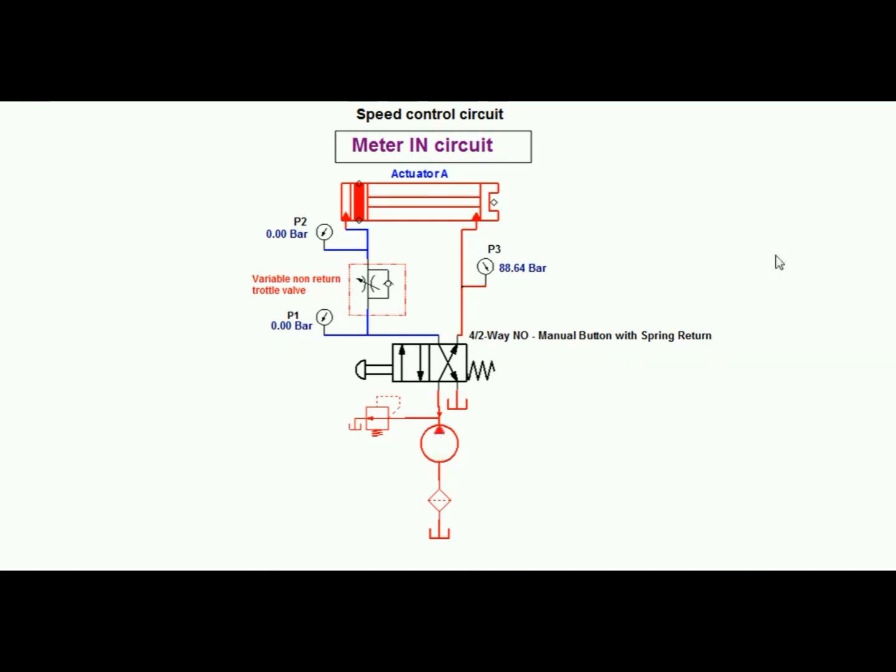Meter in is a method by which a flow control valve is placed in a hydraulic circuit in such a manner that there is a restriction in the amount of fluid flowing to the actuator.